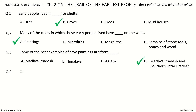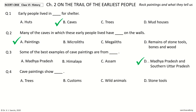Question 4. Cave paintings show ___. The options are: trees, customs, wild animals, stone tools. Your time to choose. And the answer is wild animals.